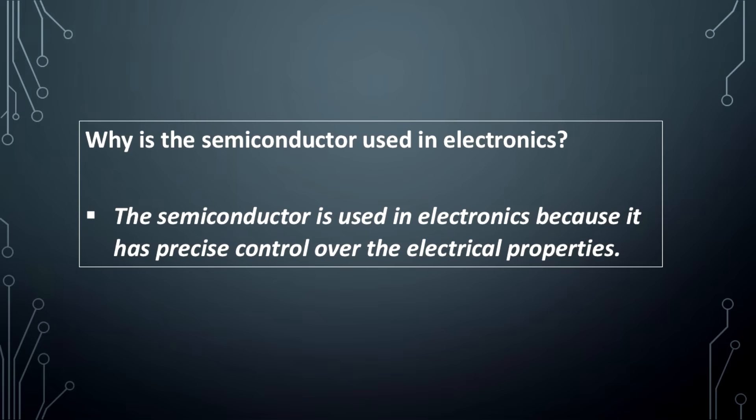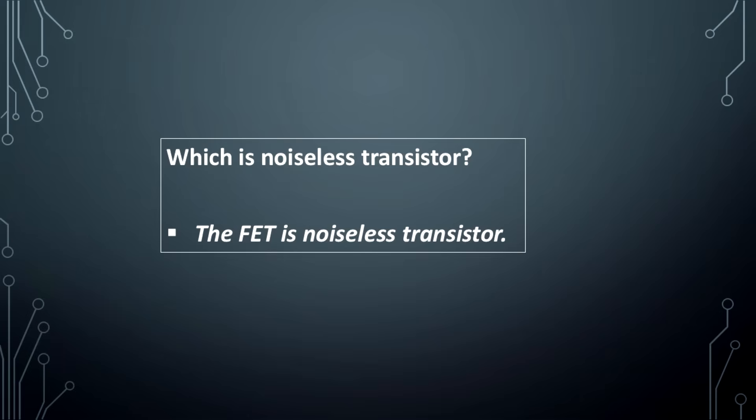Why is the semiconductor used in electronics? The semiconductor is used in electronics because it has precise control over the electrical properties.